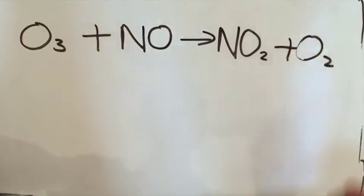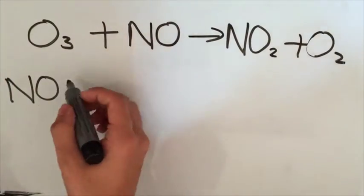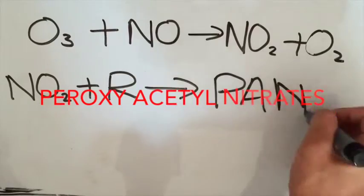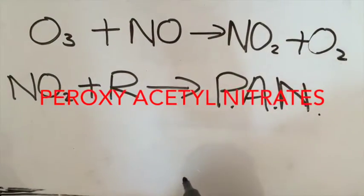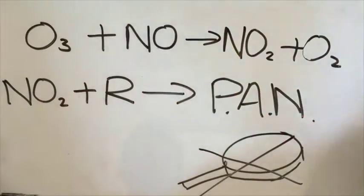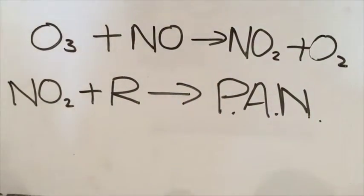When nitrogen oxides are combined with R, meaning hydrocarbons, which are released from the burning of fossil fuels, they form PAN. This stands for peroxyacetyl nitrates. They are a very common pollutant found in photochemical smog.